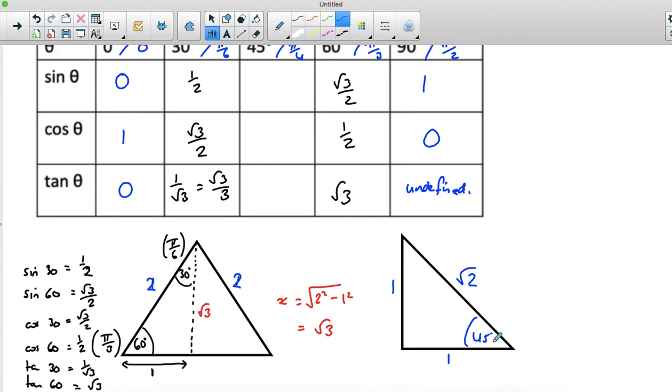So sine of 45 degrees is opposite over hypotenuse, one over root two, often written root two over two if we rationalize the denominator. Cos of 45 is exactly the same thing. And tan of 45 as we discussed a bit earlier is just going to be one over one.